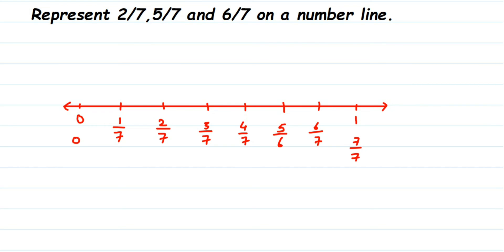Now mark the required fractions. Two by seven is located here — I'll label it A. Next, five by seven is here — I'll label it B. And six by seven is located here — I'll mark it as C.